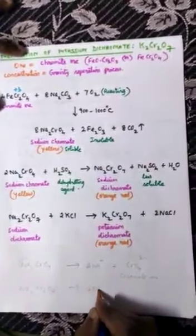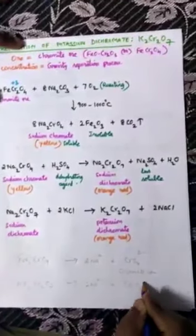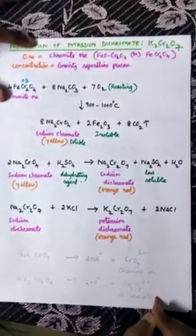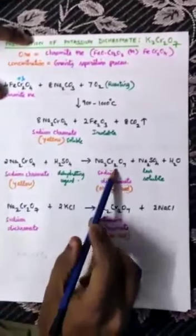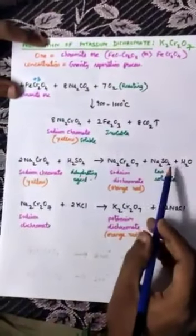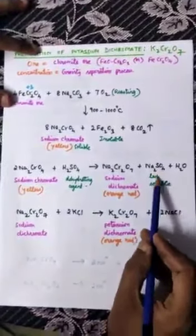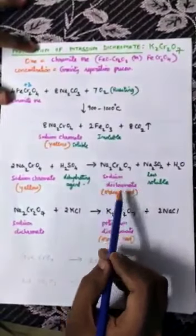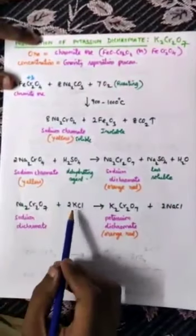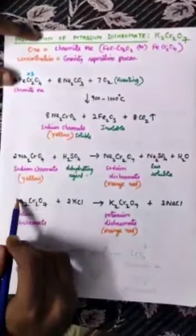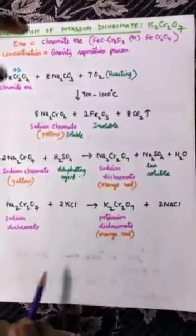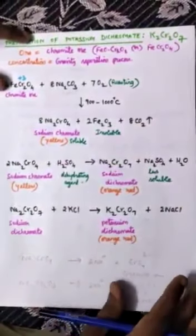The product contains 2Na⁺ plus Cr2O7²⁻ — the dichromate ion. As a result of the dehydrating agent, sodium sulfate and water are also formed. Sodium sulfate is a less soluble substance, while sodium dichromate is an orange-red soluble substance. The sodium dichromate is then fused with potassium chloride; the 2 sodium atoms pair with 2 chlorine atoms to form sodium chloride, leaving K2Cr2O7 as a crystalline product.